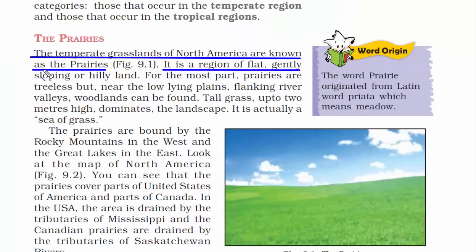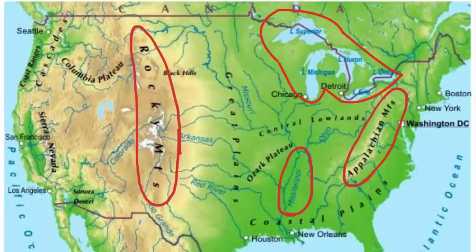It is a region of flat, gently sloping hilly land. Looking at the physical features of North America: on the west they have the Rocky Mountains, in the northeast they have the Great Lakes, and on the complete east they have the Appalachian Mountains. Right in the middle they have grassland called prairies. This place is also a lowland, and since it's a lowland, you will find plenty of tributaries of the river Mississippi draining here.